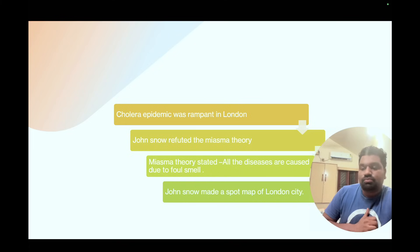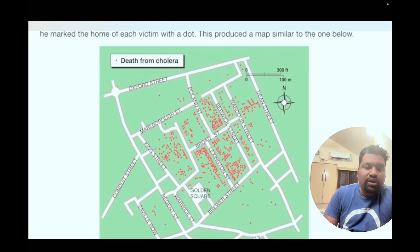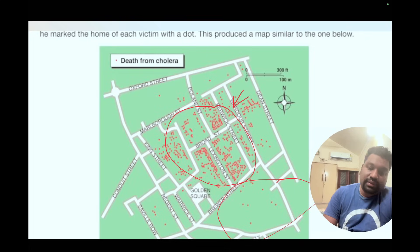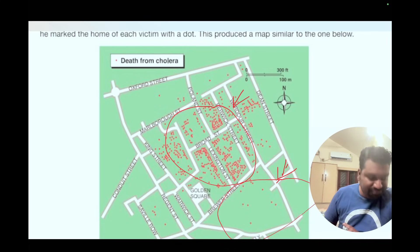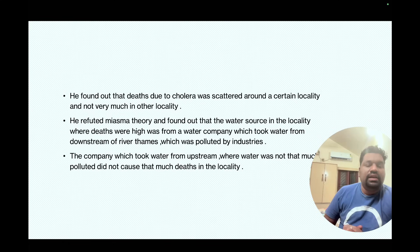John Snow didn't believe in miasma theory. He thought rationally: something is happening that is causing all these deaths. He took a map of London and spot-mapped where deaths were occurring. He found that many deaths were concentrated in a particular neighborhood and not others. His hypothesis: something in this part of the city is causing deaths. Using common sense — observation first — he drew the map of London and spot-mapped deaths happening across the city.